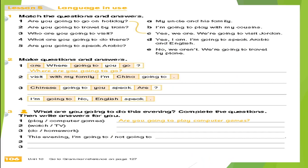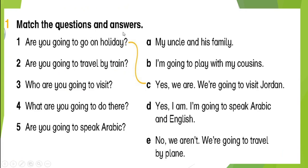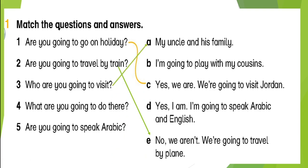Now please open your workbook page 106. Question one: match the questions and answers. 'Are you going to go on holiday?' — 'Yes, we are. We're going to visit Jordan.' Number two: 'Are you going to travel by train?' — 'No, we aren't. We're going to travel by plane.' Number three: 'Who are you going to visit?' — 'My uncle and his family.' 'What are you going to do there?' — 'I'm going to play with my cousins.' 'Are you going to speak Arabic?' — 'Yes, I am. I'm going to speak Arabic and English.'